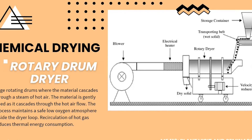Also under chemical drying is the rotary drum dryer — large rotating drums where the material cascades through a stream of hot air, gently drying as it cascades through the hot airflow. The process maintains a safe, low-oxygen atmosphere inside the dryer loop, and the circulation of hot gas reduces thermal energy consumption. Rotary drum dryers work by tumbling material in a rotating drum in the presence of drying air, commonly used in chemical and mineral industries, and in food for dehydrating waste materials like vegetables and animal feed. Applications include roasting nuts, sesame seeds, and cocoa beans.